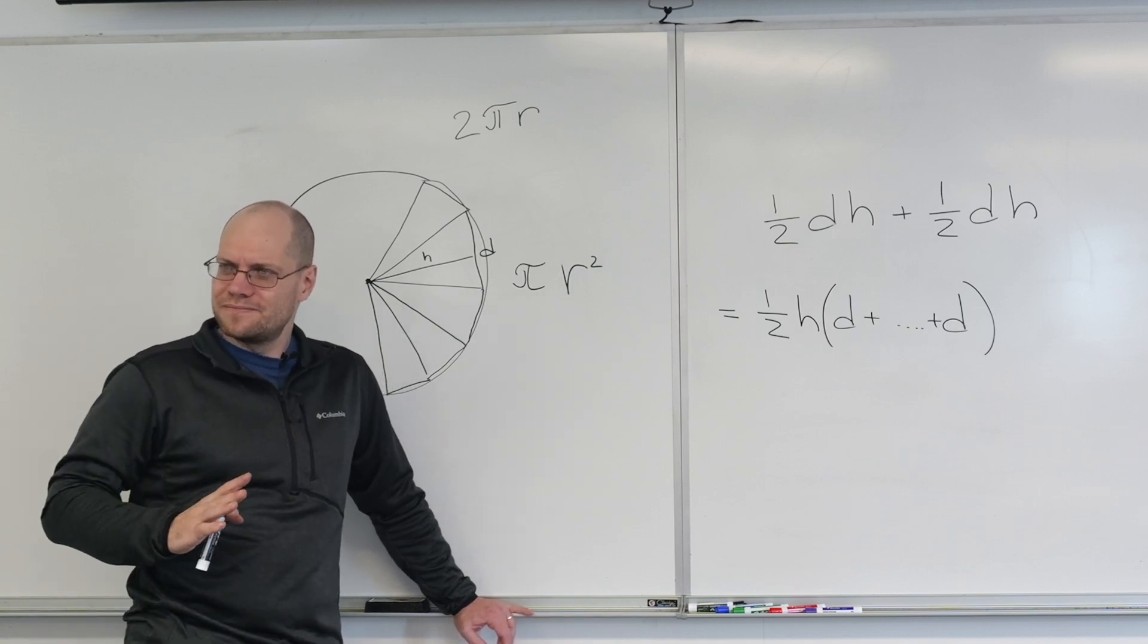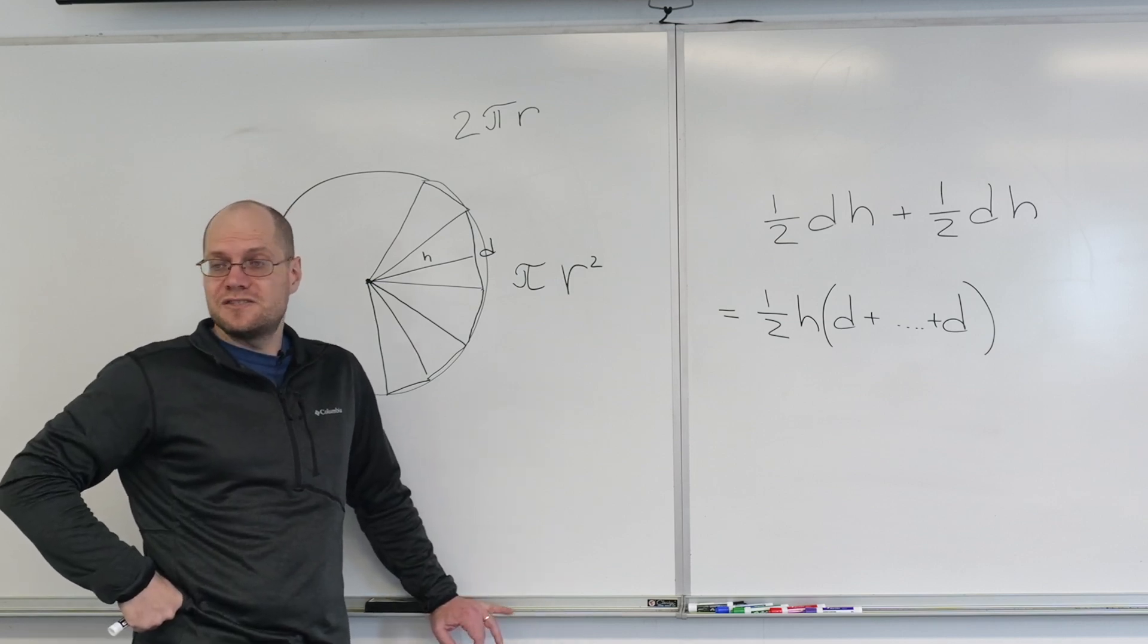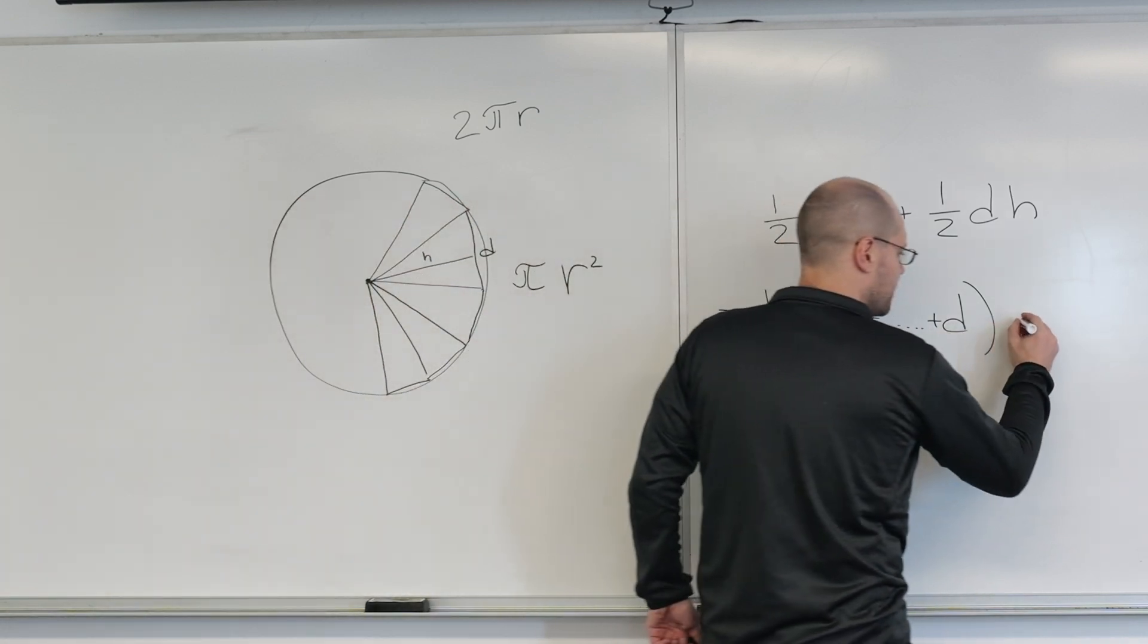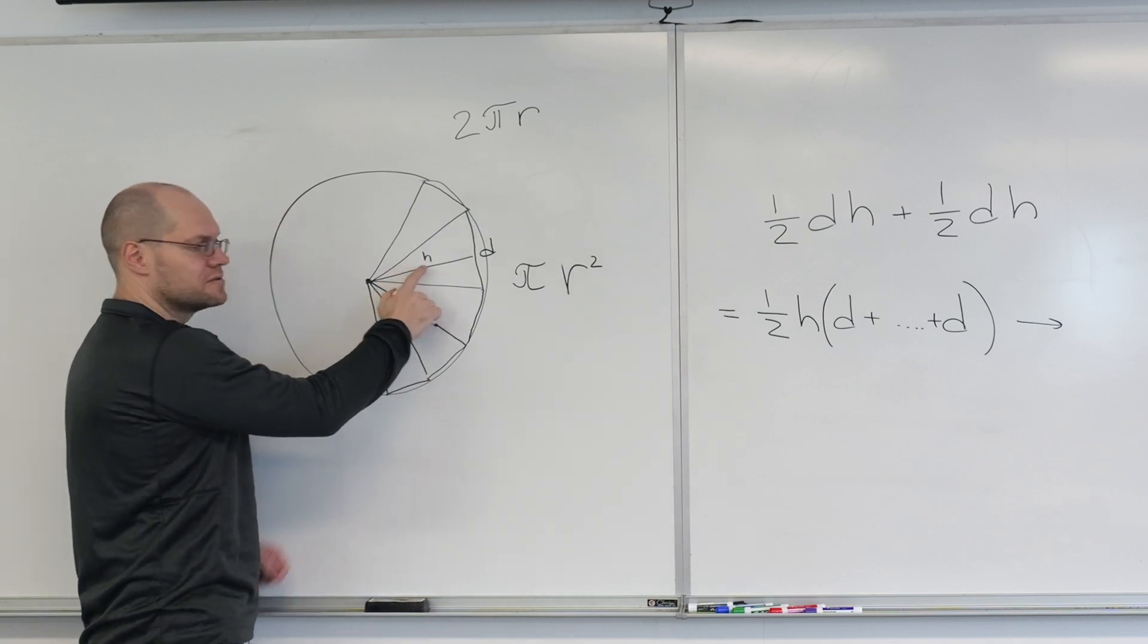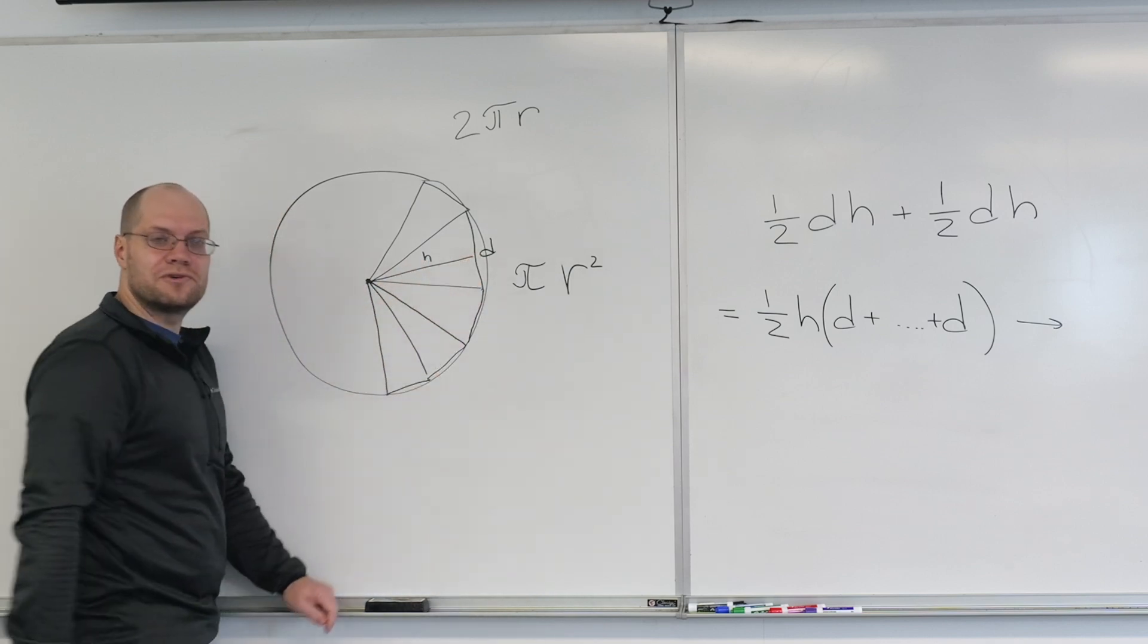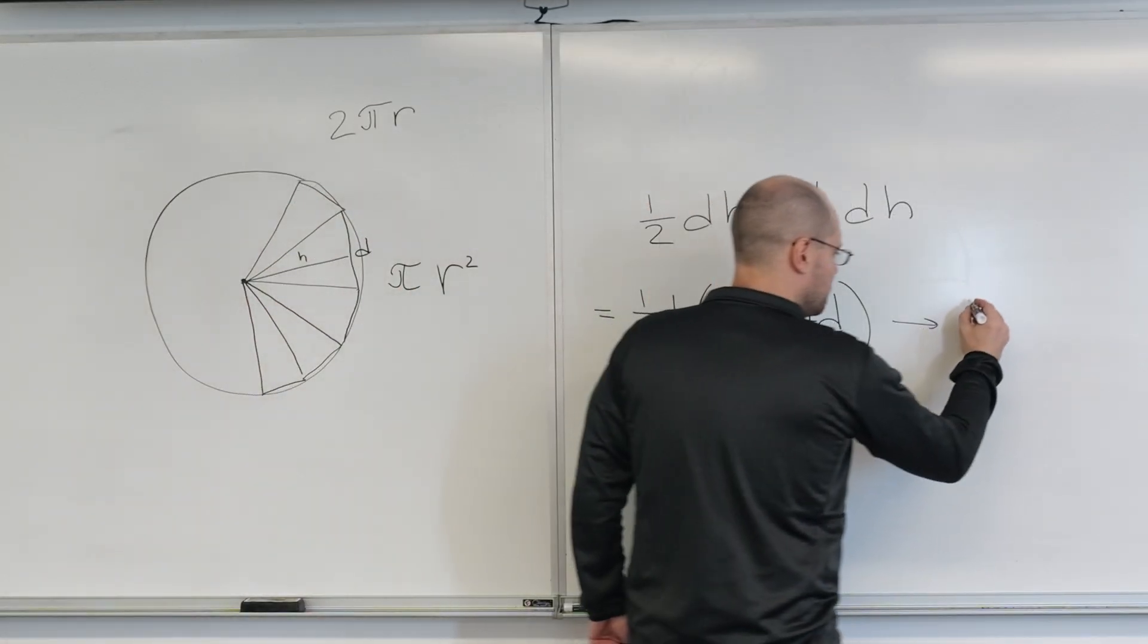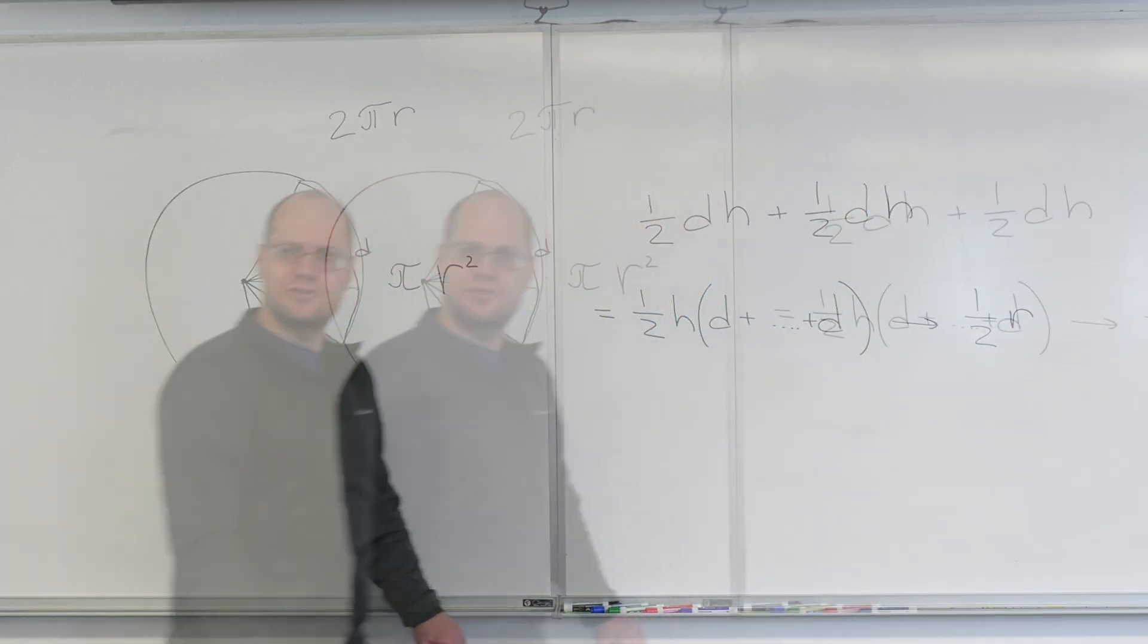And so as this becomes finer and finer, what happens to H? Well, H becomes closer and closer to the radius. So what we have is one half. Then this will be closer and closer to R.